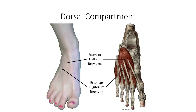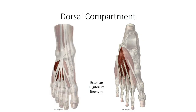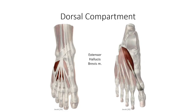A striking difference between the foot and the hand is the presence of intrinsic muscles on the dorsum of the foot not seen in the hand. Extensor digitorum brevis originates laterally off the superior surface of the calcaneus, splitting into four tendons that run obliquely to insert on the long extensor tendons of digits two through five, responsible for extension of the distal interphalangeal joints. Extensor hallucis brevis also originates laterally off the superior calcaneal surface and inserts on the base of the first proximal phalanx, assisting extension of the first digit up to the proximal interphalangeal joint.